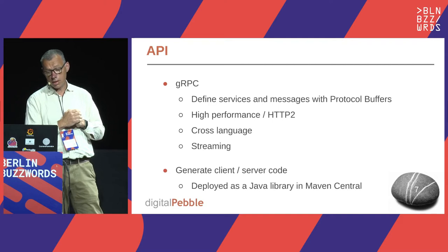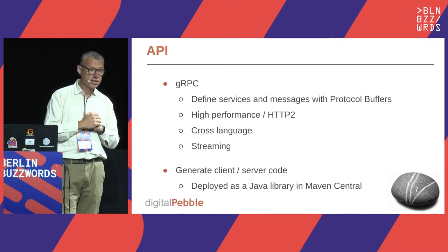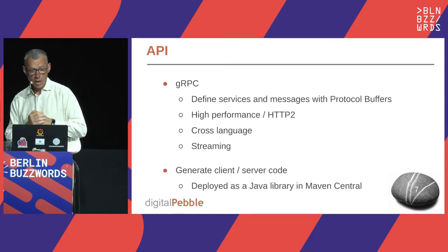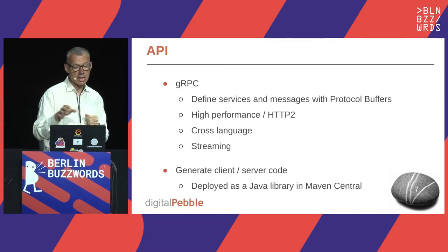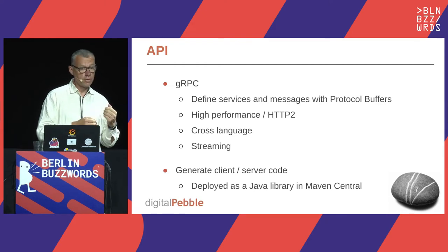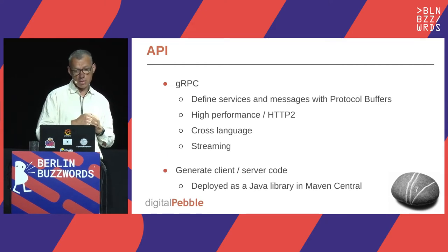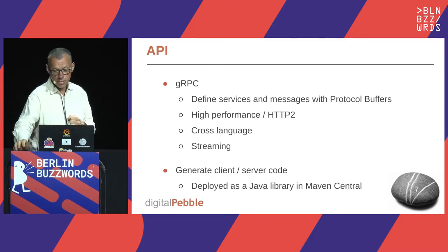One thing that gRPC gives us is the ability to have streaming methods, which is really useful for a web crawler. From the gRPC protocol buffer file, we can generate code useful for writing a client or a URL Frontier service. This is deployed in Maven Central, so if you use Java you can very easily import the library.